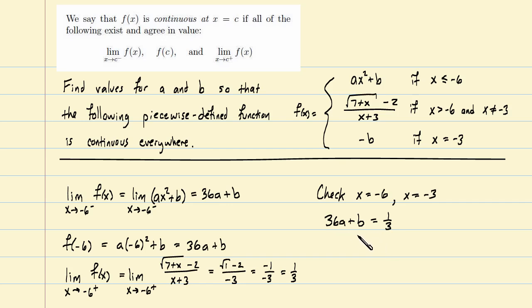So this value and this value and this value must all agree if we are to be continuous at negative 6. Notice that doesn't tell us what the values of a and b are. It merely tells us that 36a plus b has to equal one-third. But that's okay. That's more information than we had before about a and b. In particular, that's one equation in two variables, a and b. If I could find a second equation in those same variables, maybe I would have a system of equations and I could solve for a and b.